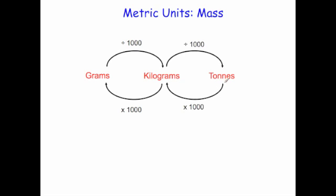To convert between tons and kilograms, you times by a thousand. So three tons would be three thousand kilograms. And to convert between kilograms and grams, you times by a thousand. So four kilograms would be four thousand grams.